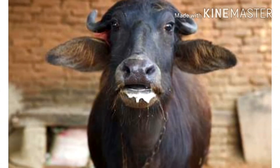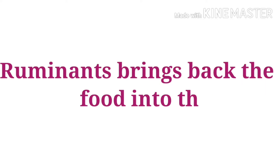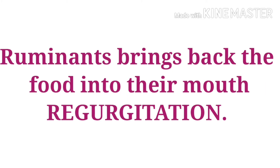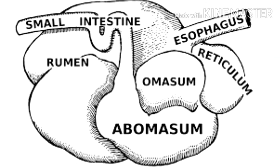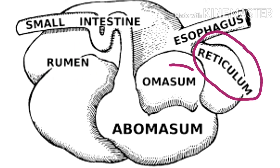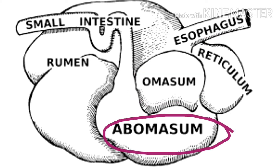When the animals are not eating, they bring the food back to their mouth and chew it again. We call this regurgitation. Animals that perform rumination are called ruminants. Ruminants have four chambers in their stomach. These chambers are called the rumen, reticulum, omasum, and abomasum.